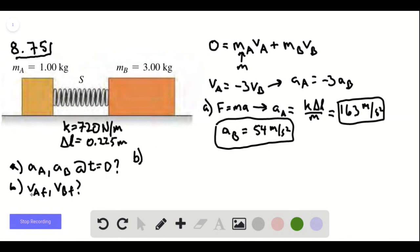Now, for part b, this turns into a conservation of energy problem. Our initial potential energy is one half k delta l squared.